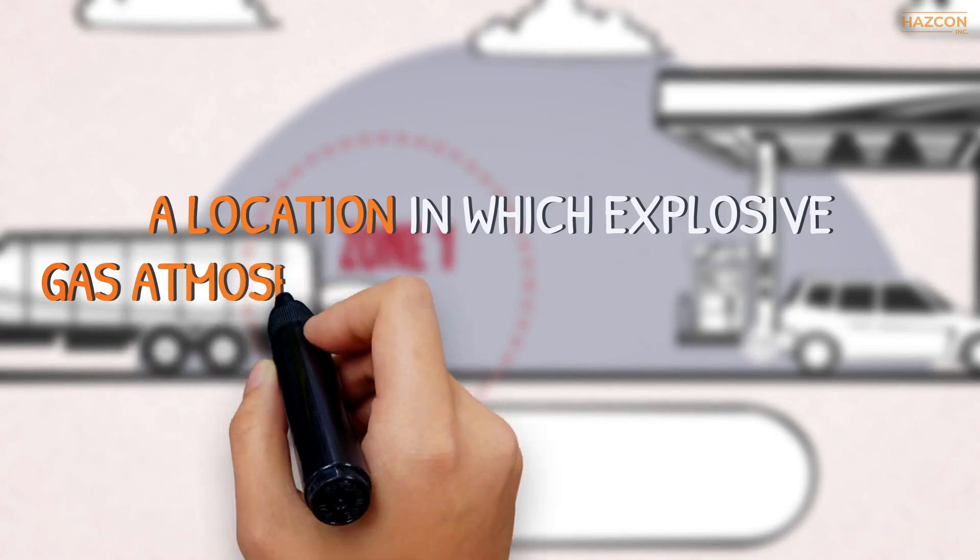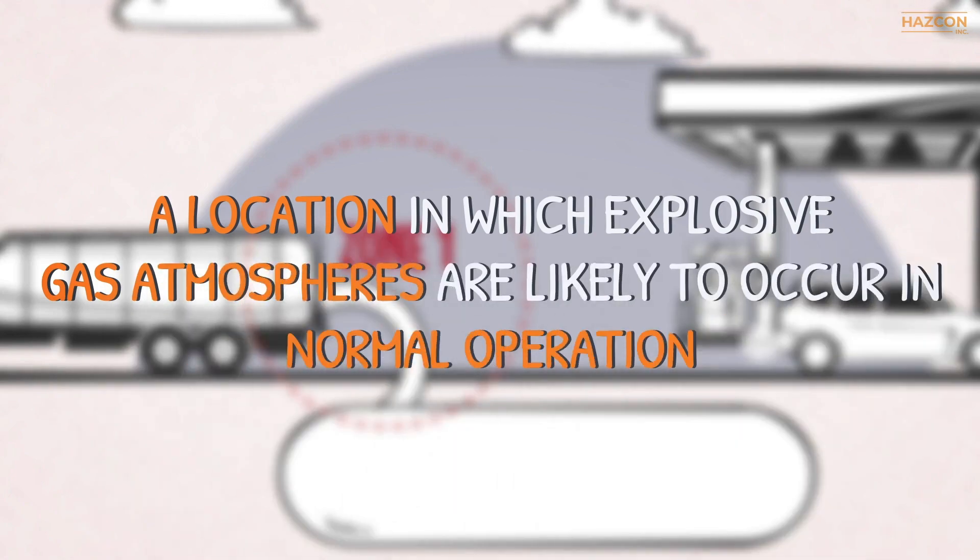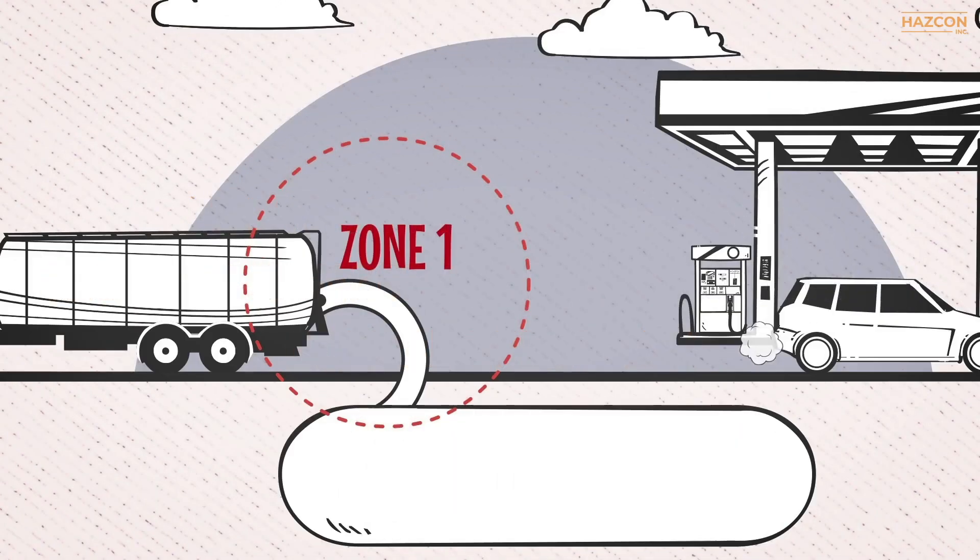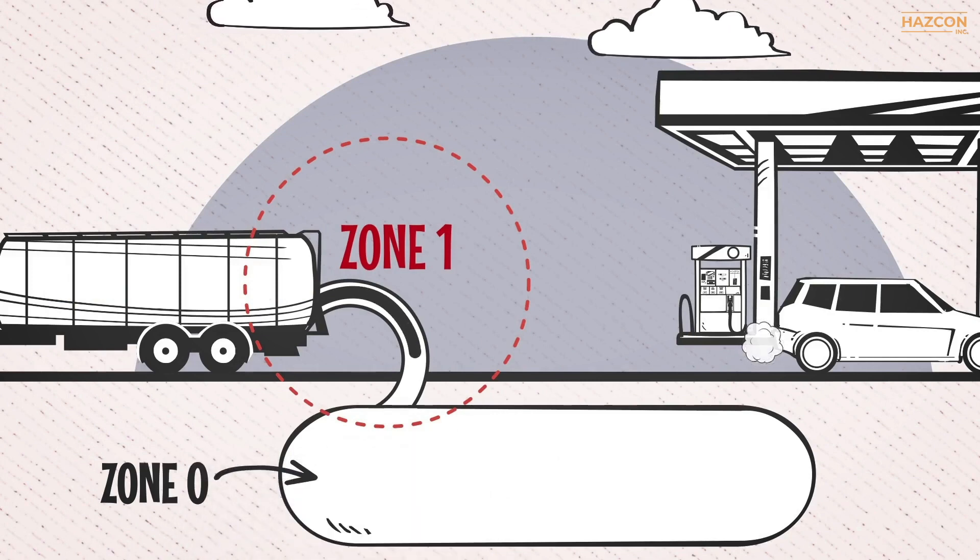Zone 1 is a location in which explosive gas atmospheres are likely to occur in normal operation, or the location is adjacent to a Zone 0 location from which explosive gas atmospheres could be communicated.